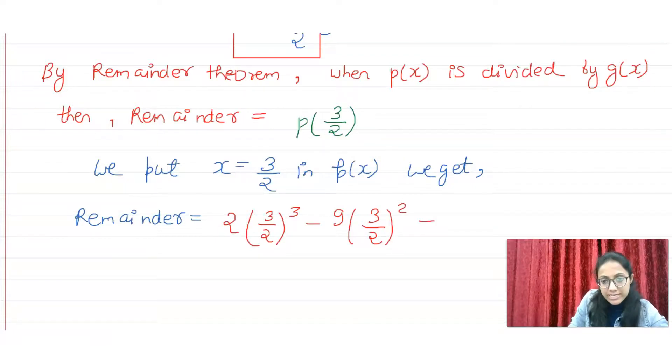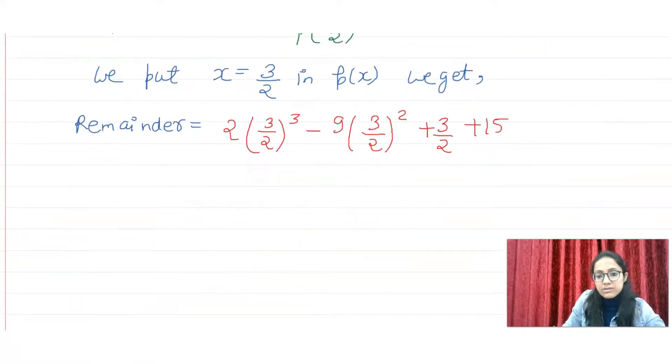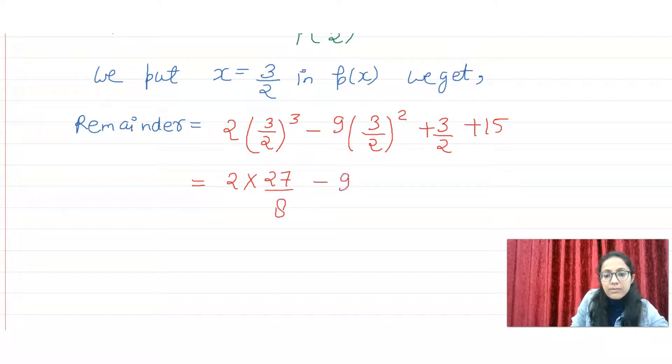Plus x, then we'll write plus 3 by 2. Then plus 15. So 2 into 3 by 2 cube, that is 27 by 4, minus 9 into 3 by 2 square, that is minus 81 by 4, then plus 3 by 2, then plus 15.